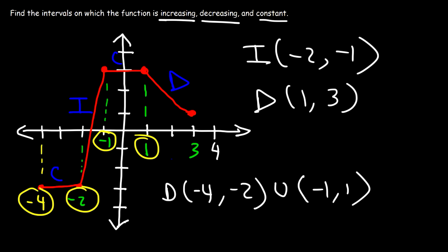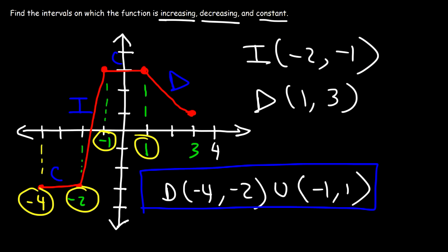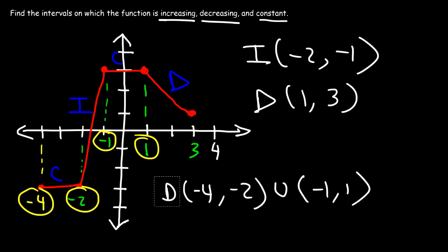And so that's it. Now you know how to determine when the function is decreasing, when it's increasing, and when it's constant. I notice I put a 'd' for one section — that should be a 'c' for constant. So let's just fix that.